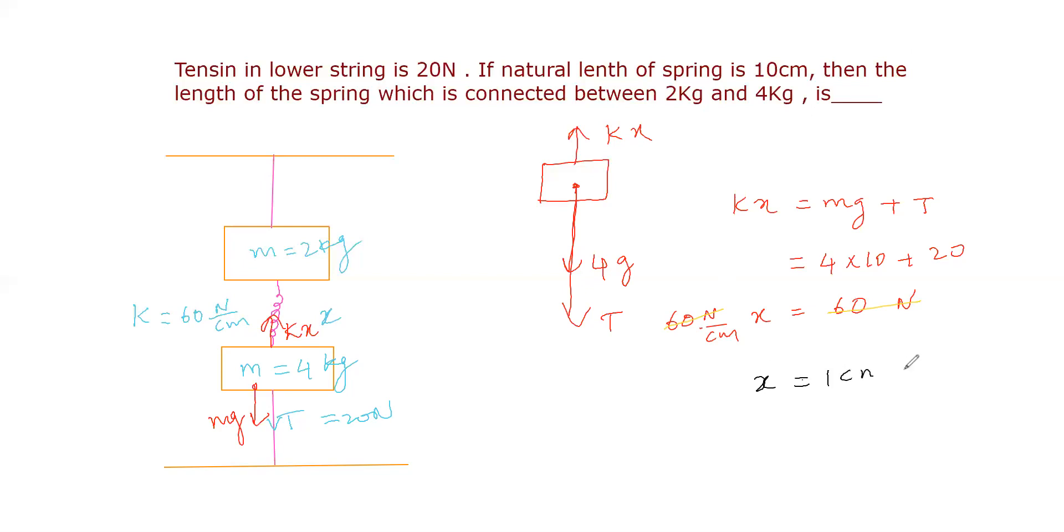1 centimeter is the extension. But they asked for the length of the spring. Length of the spring means natural length plus extension. Natural length is 10 centimeters and extension is 1 centimeter, so the length of the spring under equilibrium is 11 centimeters.